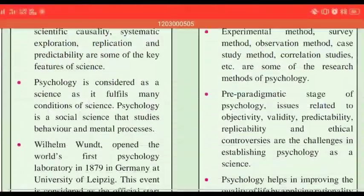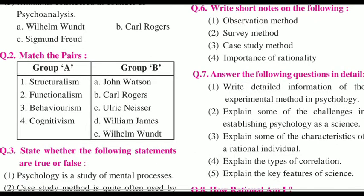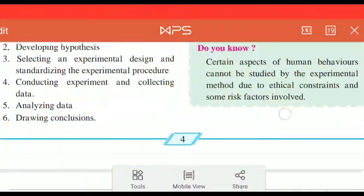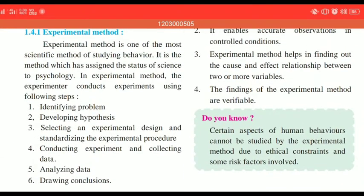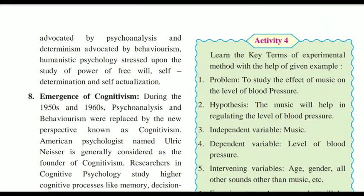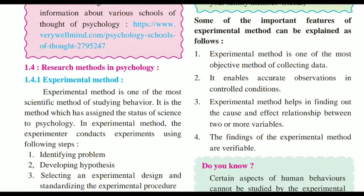The last and most important questions are written in detail — these questions mostly come for 10 marks. We start with 7.1: write the detailed information of the experimental method in psychology. You need to write point by point about the experimental method. Even the green box you need to write. This 7.1 is on page number 4. Write what experimental method is, how it works, what the problems and hypothesis are, what IV, DV, experimental and participant mean. Write all important points up to verifiable.